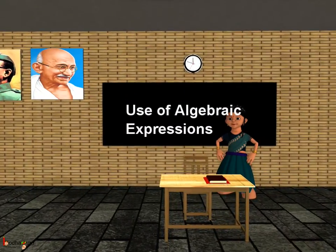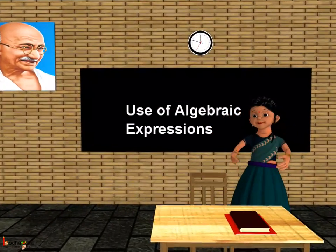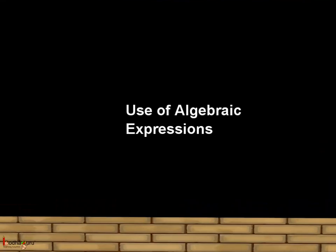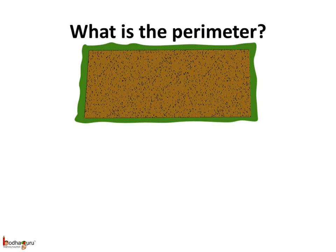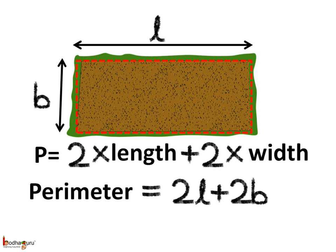Good morning children. Today we shall learn how algebraic expressions are used specially in generalization. Let us take an example. What is the perimeter of any rectangle? We know the perimeter is the boundary of a closed figure, and so the perimeter of a rectangle is 2 multiplied by the length plus 2 multiplied by the width of the rectangle.